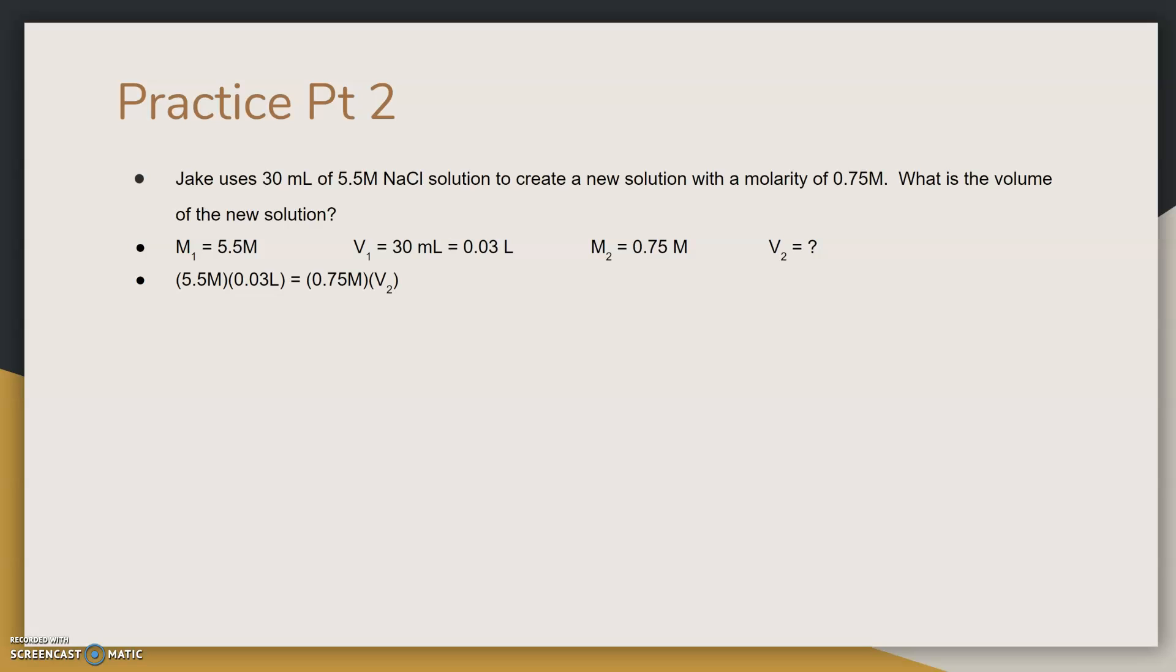Now we substitute all the known values and the unknown values into the formula for dilutions. We isolate the variable, in this case V2, and we simplify. 5.5 times 0.03 liters is 0.165 molarity liters. We divide that by 0.75 molarity and obtain the answer, which is 0.22 liters.